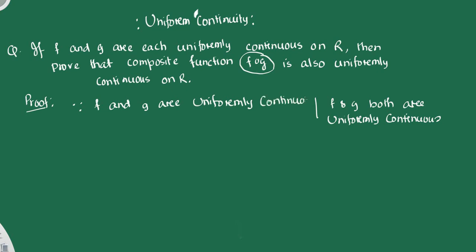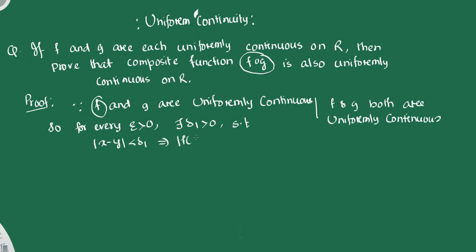First, apply the uniform continuity definition to function f. For every epsilon greater than 0, there corresponds a delta 1 greater than 0 such that whenever |x − y| < delta 1, it implies |f(x) − f(y)| < epsilon/2. And epsilon/2 will again be positive. This is inequality number 1.